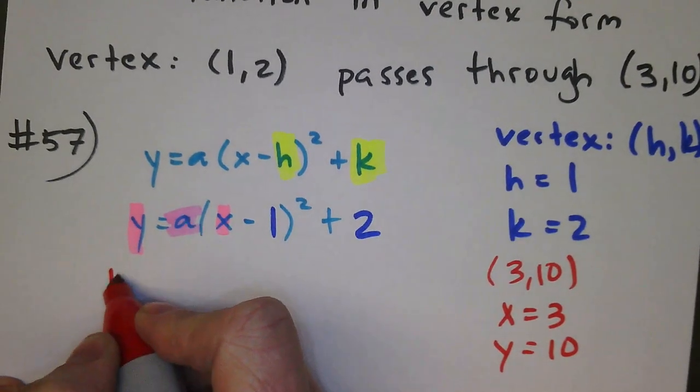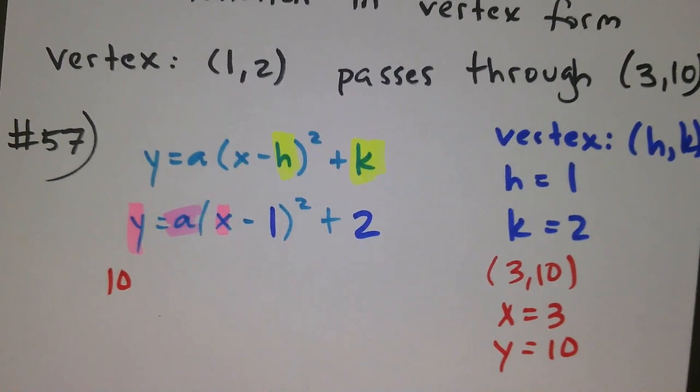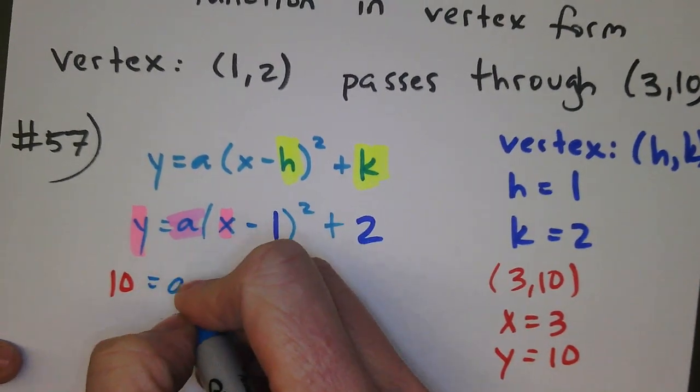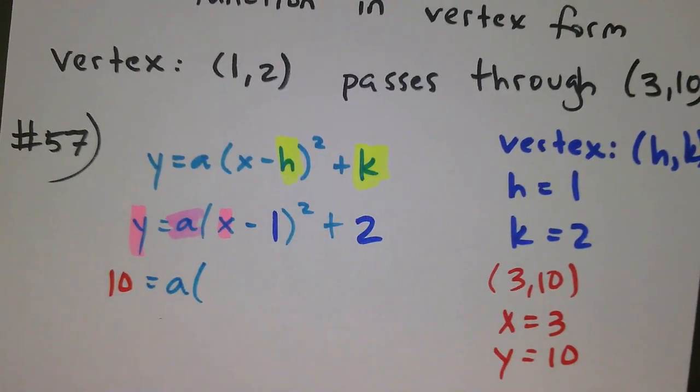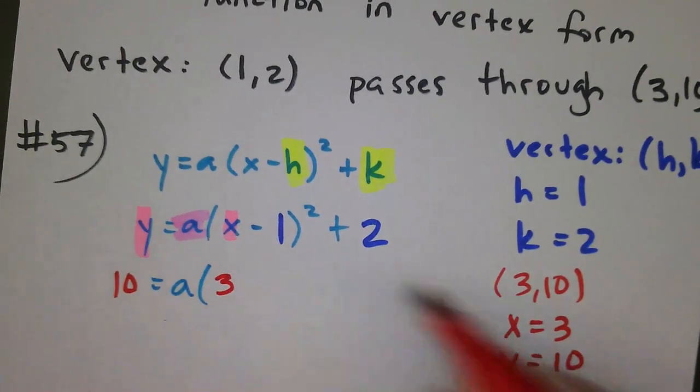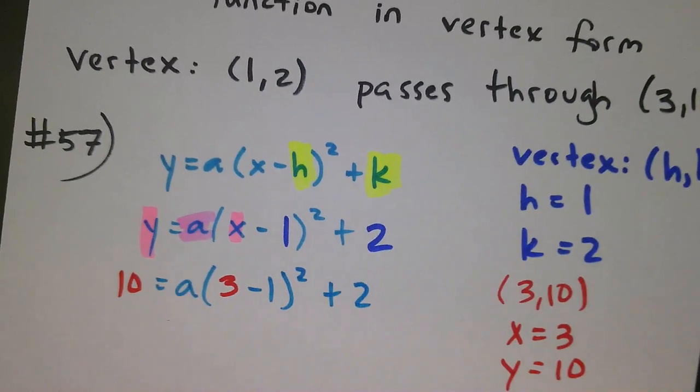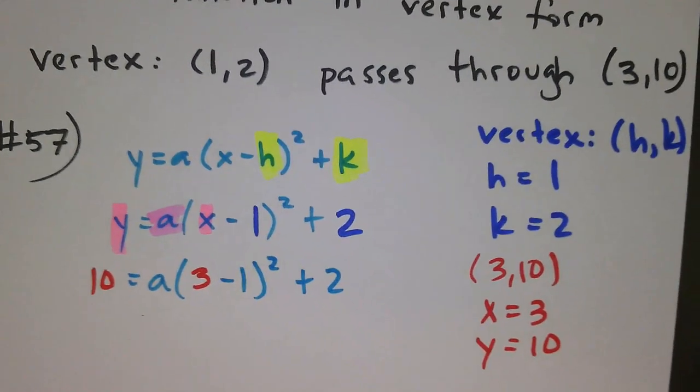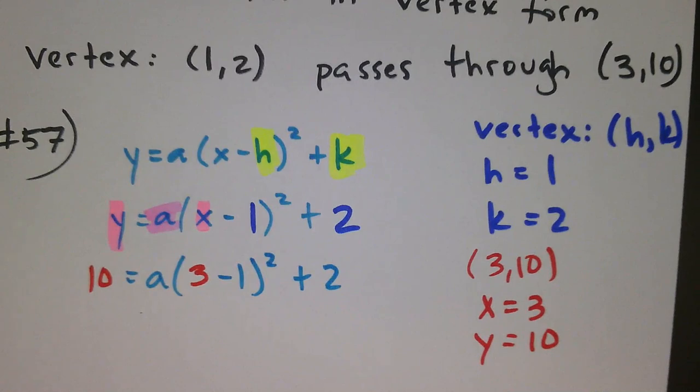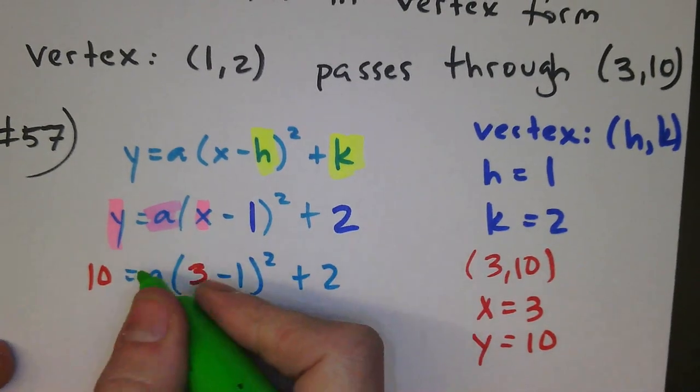So the y value is 10, so this is going to be 10. And that's going to equal my a value. The x value we said here was 3. So 3 minus 1 squared plus 2. Now the only unknown here, the only thing I don't know is a. I'm going to solve for a.